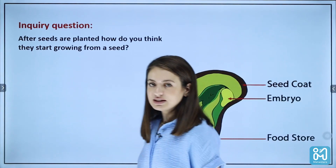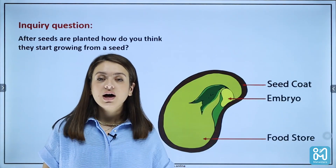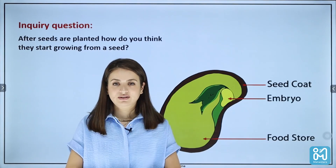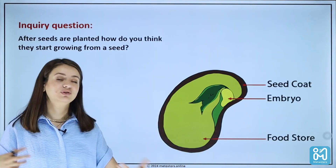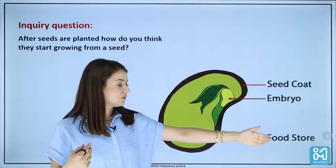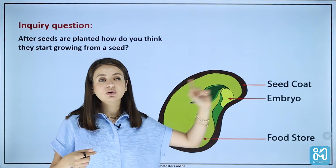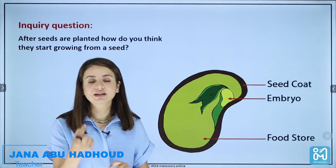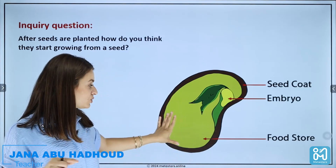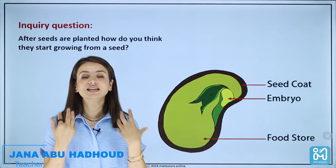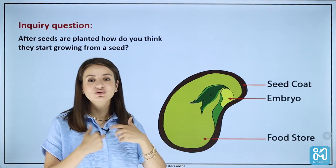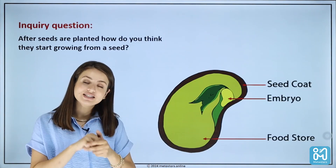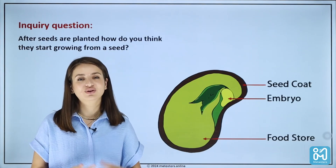Do you think seeds need food or energy to germinate and grow? Of course, but from where do you think the seed will have this energy? We need to have a quick revision of what we've learned in the previous lesson. We have three parts of the seed: the seed coat, which protects the seed from being damaged; the embryo, which is the part that develops into a young plant; and the food store, which provides the energy and nutrients required for the seed to germinate. Seeds don't have French fries — they have food stored inside the seed that they use to germinate and grow into a young plant.